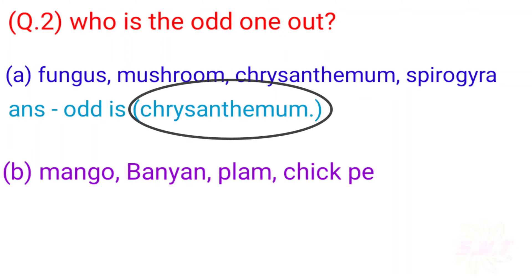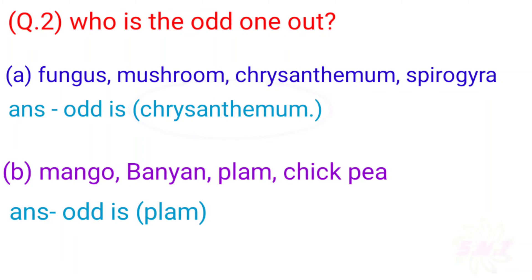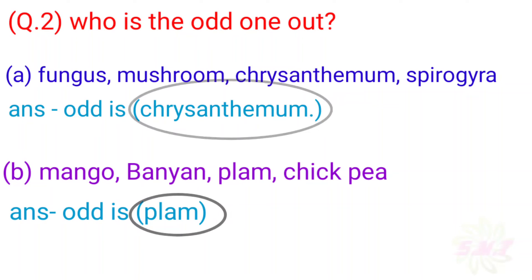B: Mango, Banyan, Plum, Chickpea. Answer: The odd one is Plum.